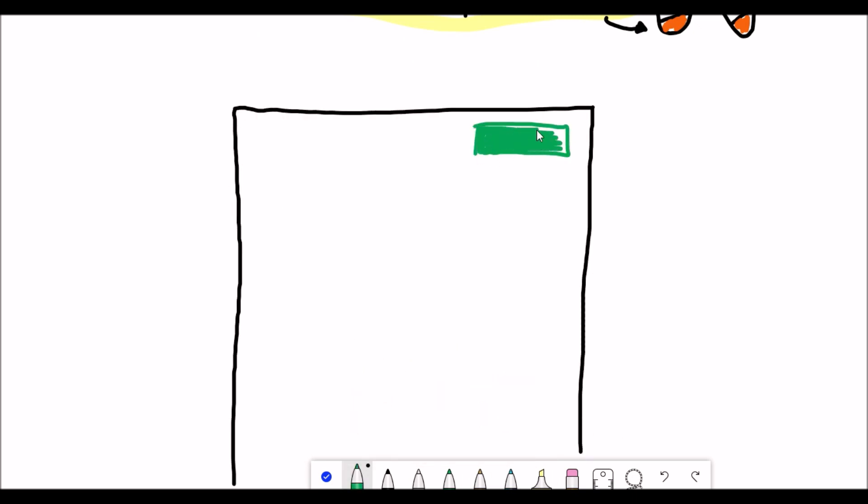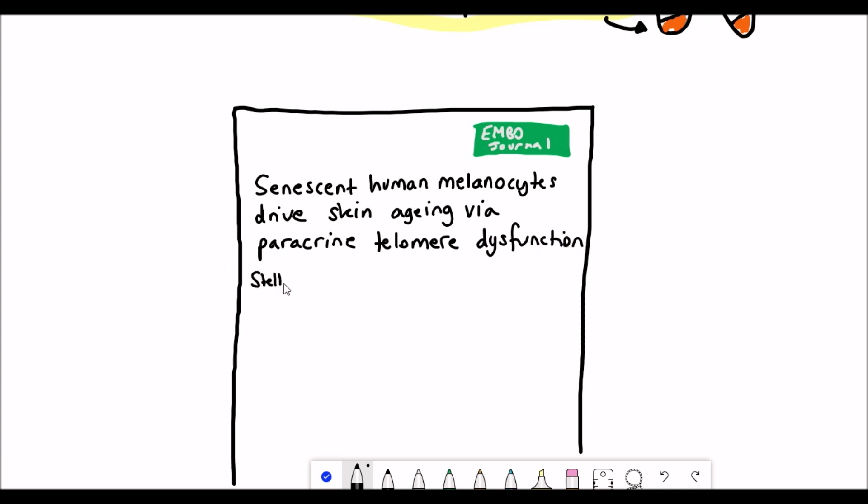So the majority of the research that I'll talk about in this video comes from a recent article that came out the end of last year in EMBO: Senescent human melanocytes drive skin aging via paracrine telomere dysfunction. There's probably a lot of terms in there that need a bit of explanation first before we go into describing the results.